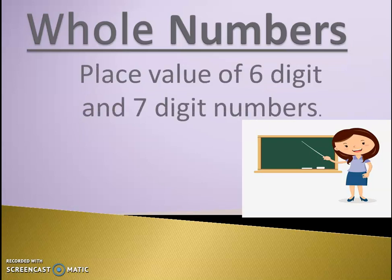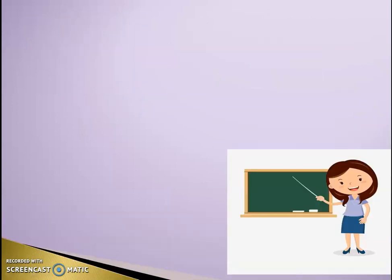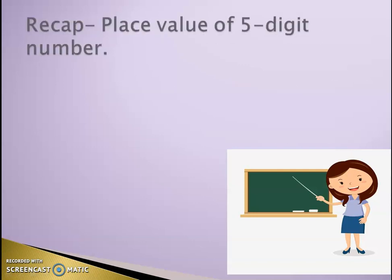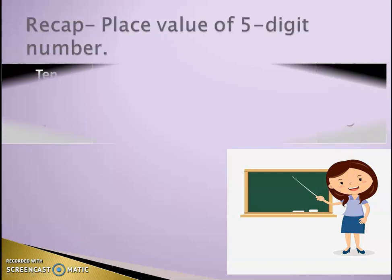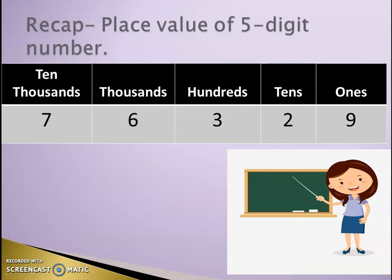But before that, I would like to recall the place value of 5-digit numbers. This is an example. If you start from your right-hand side, the place value of 9 is ones, 2 is tens, 3 is hundreds, 6 is thousands, and 7 is ten thousands.